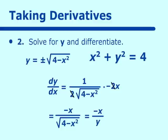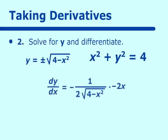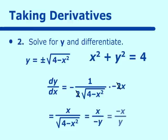Now let's try the negative case. dy/dx equals negative one-half times the square root of 4 minus x squared, times the derivative of 4 minus x squared, which is negative 2x. This reduces to x over the square root of 4 minus x squared. Because y equals negative square root of 4 minus x squared, that square root equals x over negative y, or simplified, negative x over y. So both cases come back to the implicit form of negative x over y. Many times solving for y is impossible, so we have to differentiate implicitly.